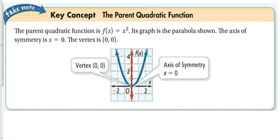Here's a picture of the parent quadratic function. Notice that the vertex is at (0, 0), the axis of symmetry is at x = 0, and it looks like a nice smooth curve. To figure out the points on this curve, we can plug numbers into the parent function.